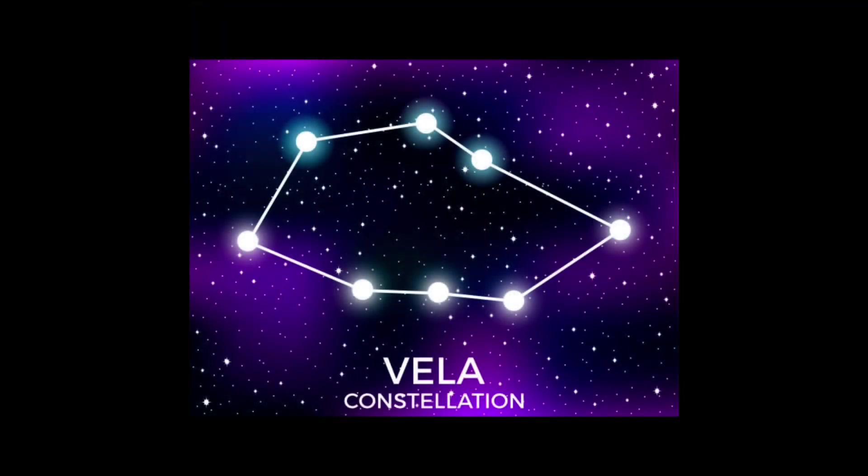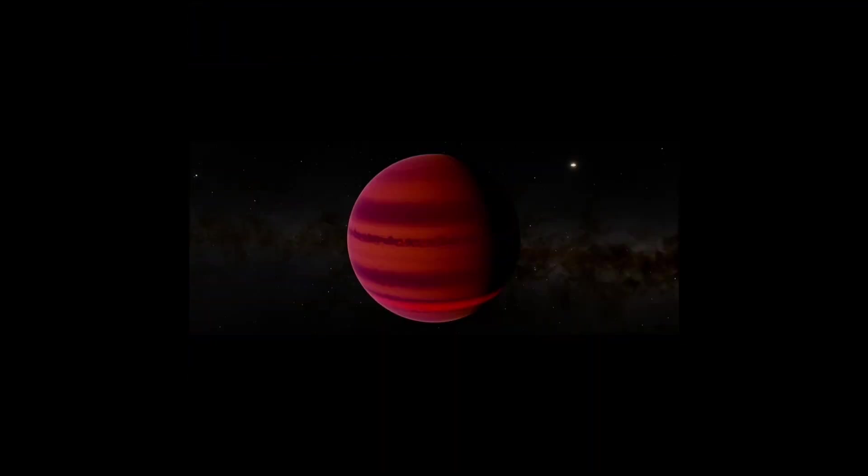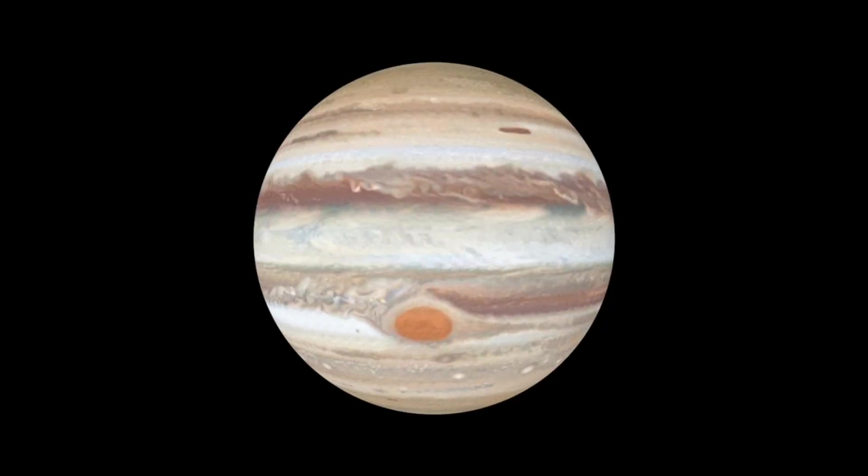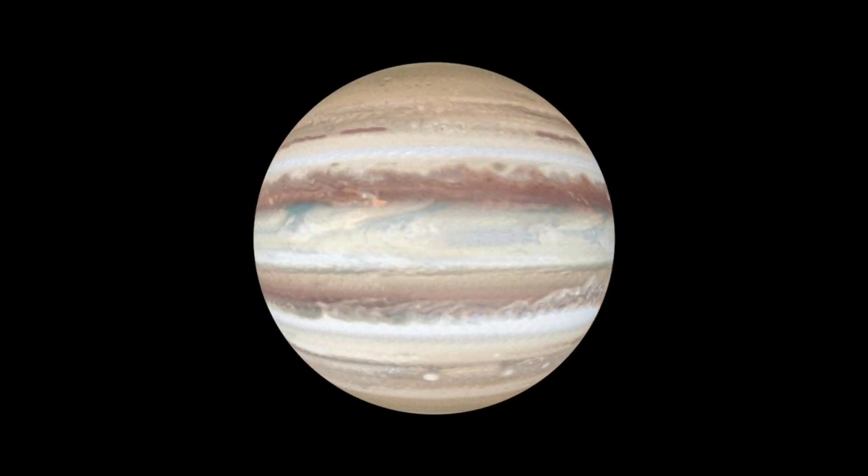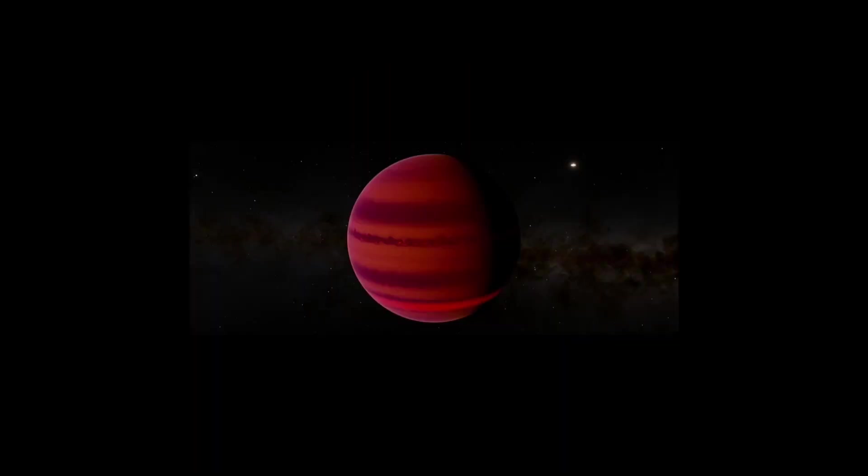Located in the constellation Vela, DENIS-P is a substellar object which mass equates to 28.5 Jupiters. It is currently one of the largest planets ever found.